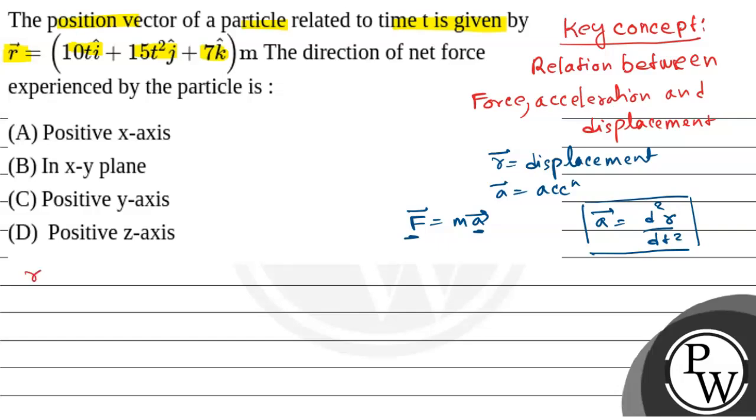The question is given that r vector is equal to 10t i cap plus 15t square j cap plus 7k cap. So dR by dt is equal to 10 i cap plus 30t j cap plus 0 because 7 is constant.